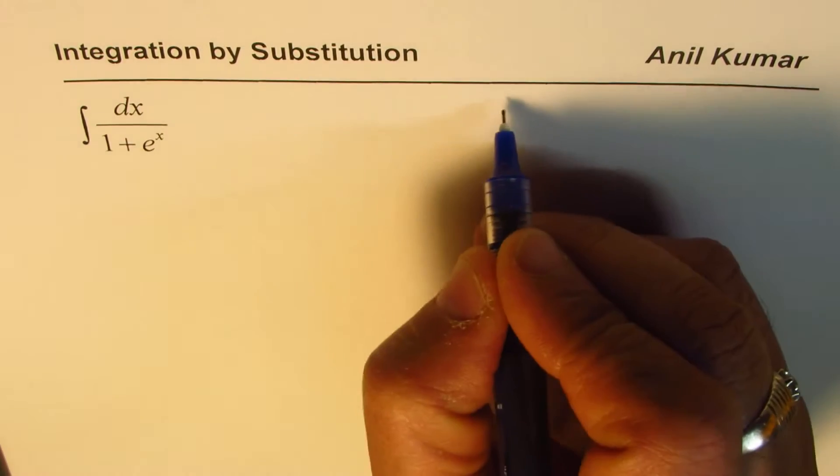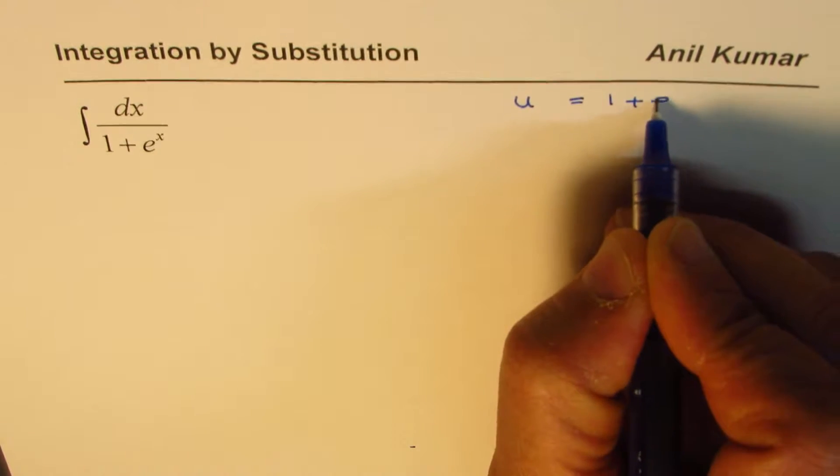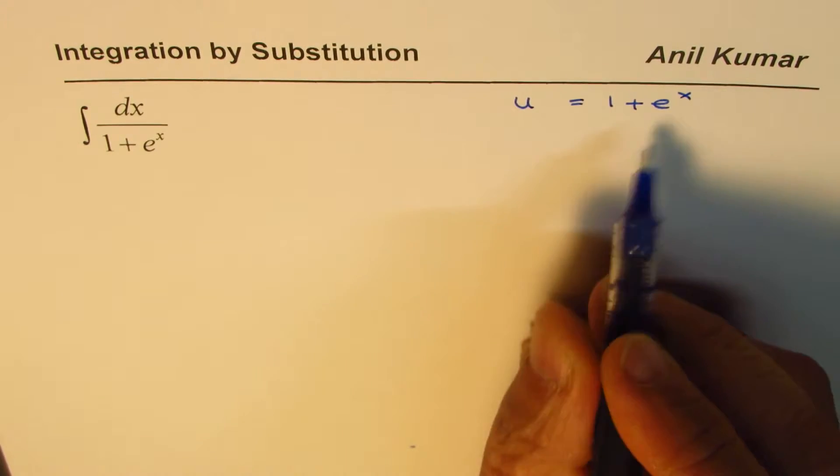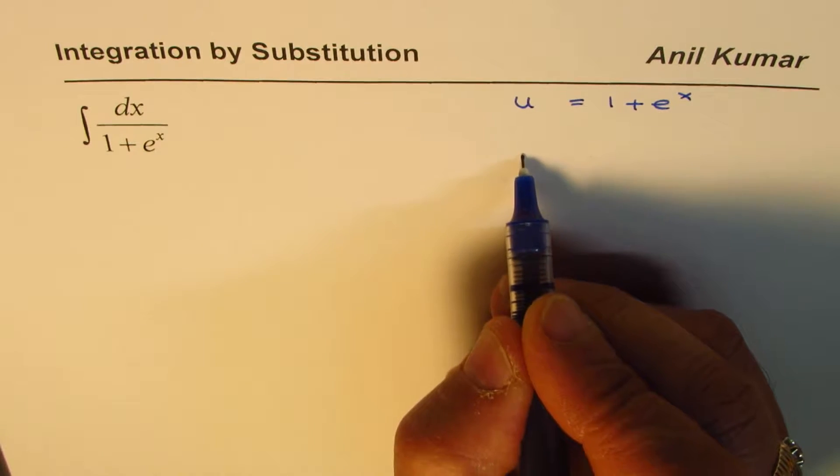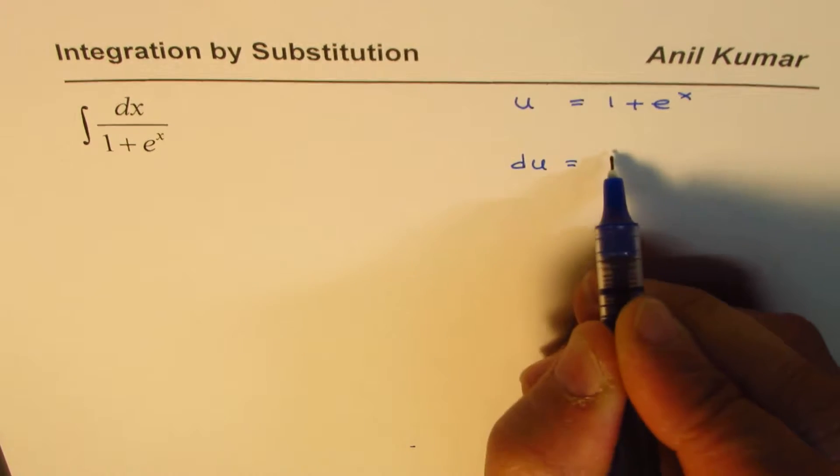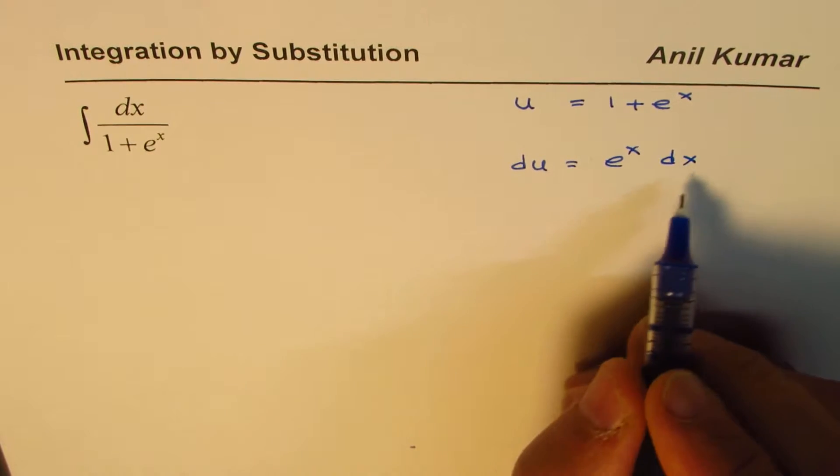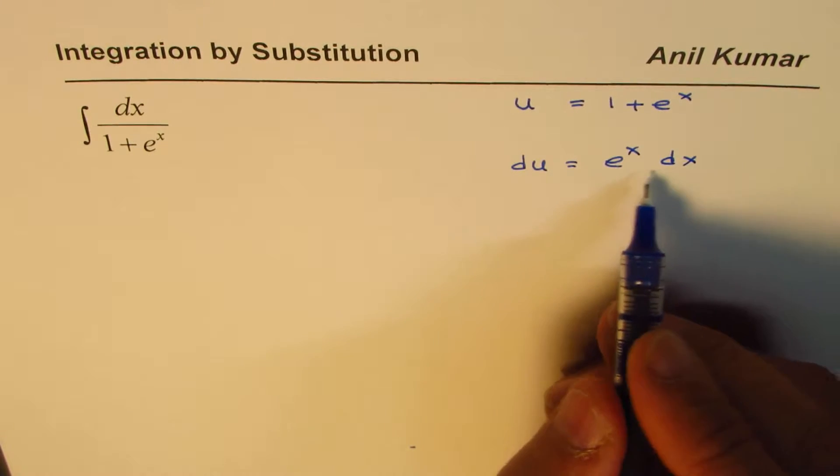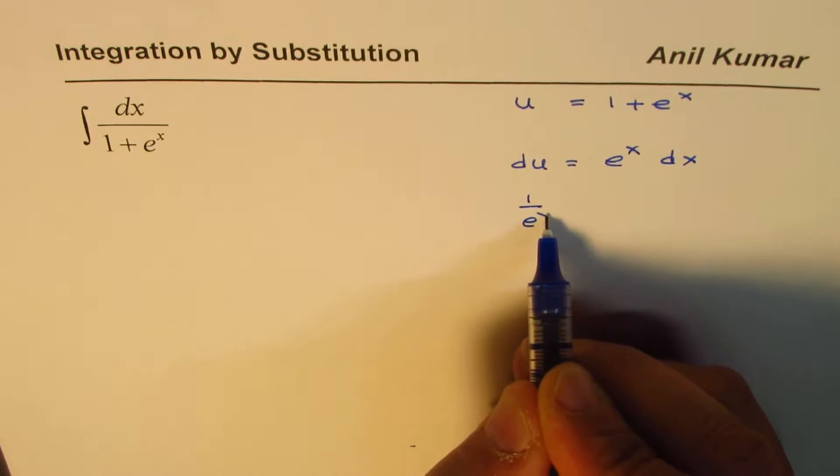So let us substitute the denominator as u, so u equals 1 plus e to the power of x. And from here we can actually write what du is, so we can write du is e to the power of x dx. So what should be dx? So dx will be 1 over e to the power of x du.